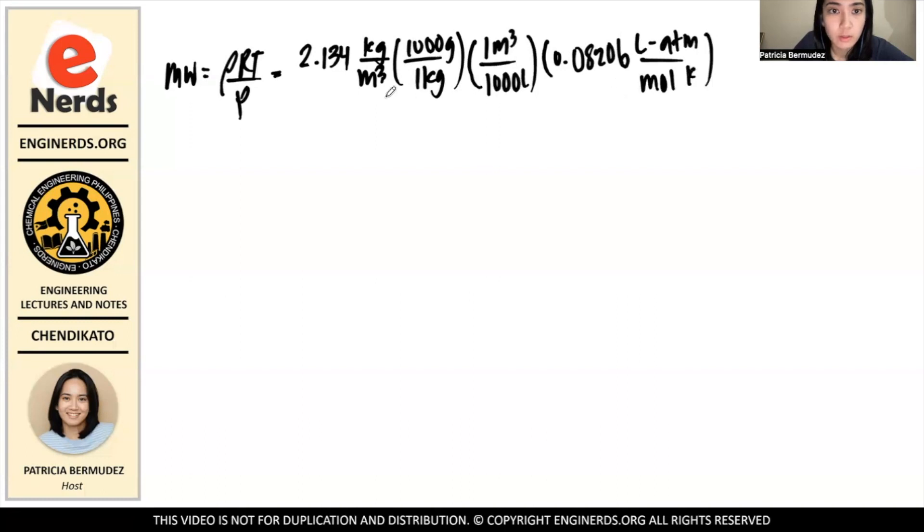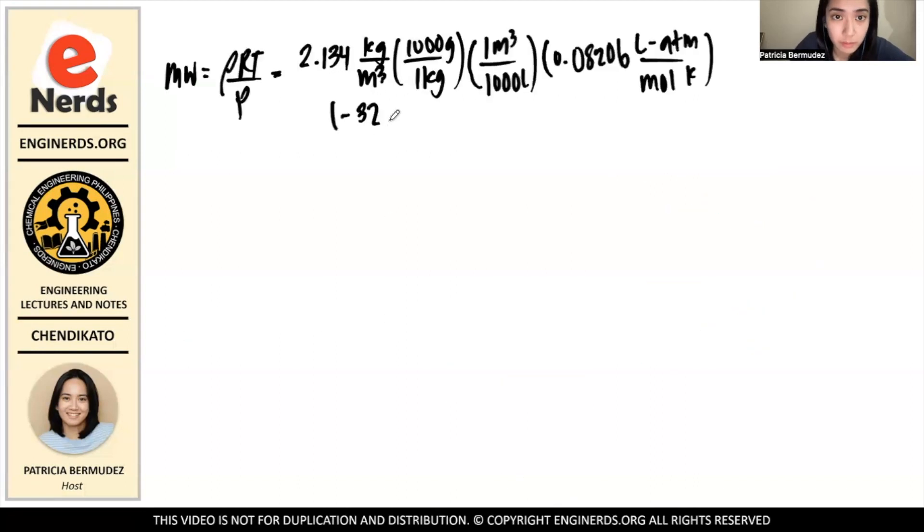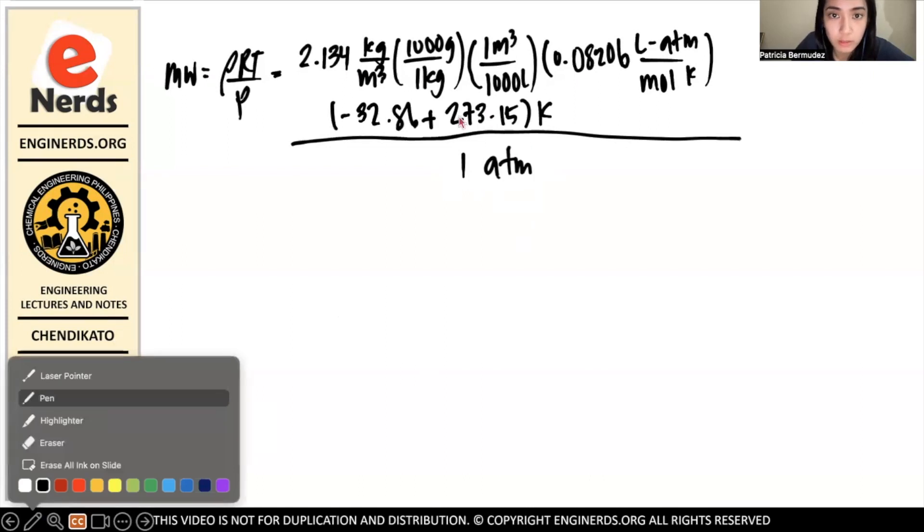And then we multiply by the temperature. And since this one is in Kelvin, you have to convert the temperature to Kelvin as well. So it's -32.86 + 273.15 K. And then everything here is divided by 1 atm. So this is the fraction bar.